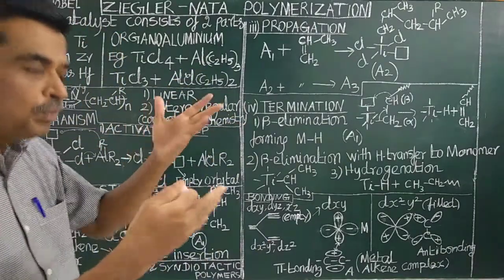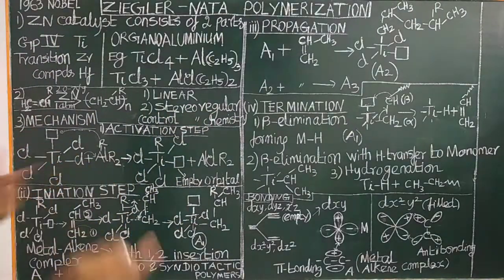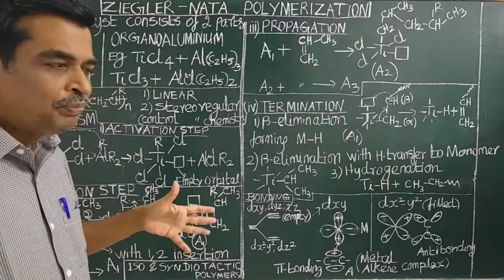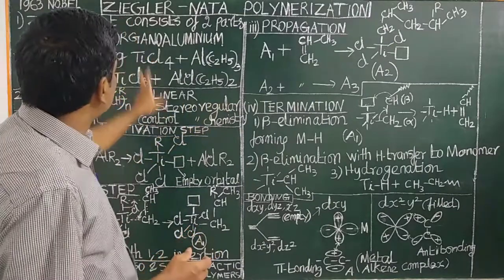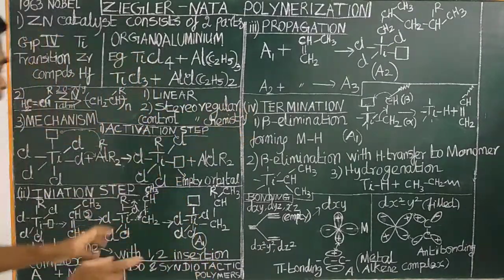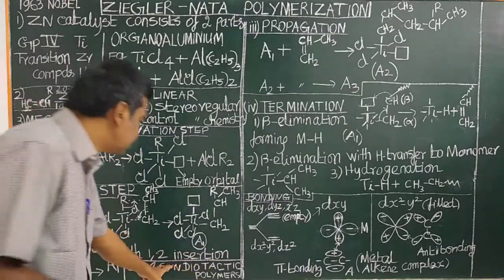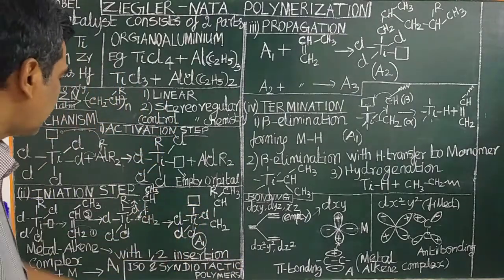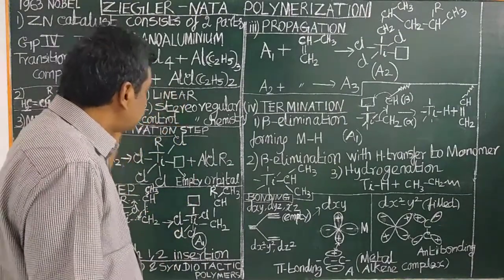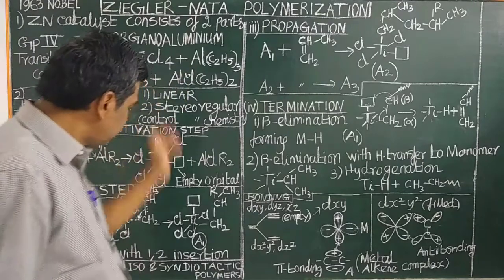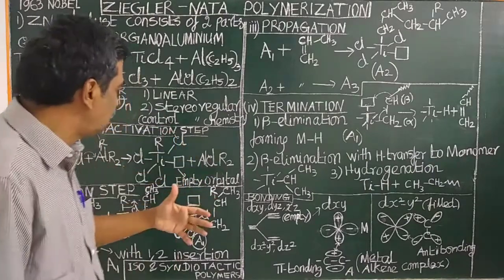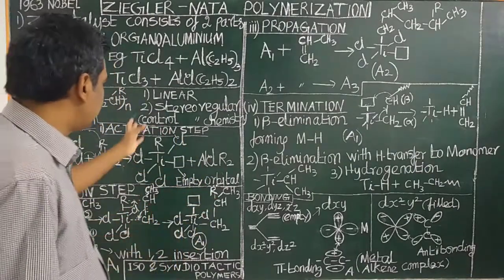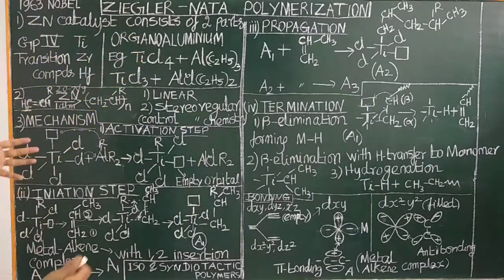Free radical polymerization gives polymers with different molecular weights that form randomly. Ziegler-Natta polymerization gives stereoregular polymers — for example, isotactic and syndiotactic. By using this catalyst, we can control the stereochemistry of the polymers.